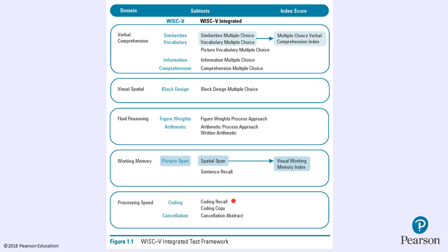The Processing Speed subtests — Coding Recall and Coding Copy — allow you to examine where low Coding performance may have originated. Coding Recall has four conditions: first the child sees the regular Coding numbers and recalls which symbol goes with each; then a free recall condition where the child writes any symbols they can recall; then symbol-digit recall, which reverses the first condition; and then a matching condition. Cancellation Abstract is a variation on Cancellation with all the same positions and response options, but with abstract shapes instead of semantic or categorization demands.